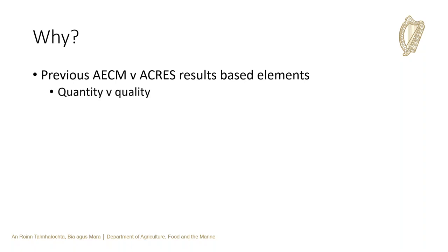When we look at the previous agri-environmental schemes you might be more familiar with, like GLAS, EOS, or even REPS, these schemes often focused on the quantity rather than the quality of the action for biodiversity — for example, how many hedges did you plant or how many hectares of traditional hay meadow did you have. But this didn't always reflect how good or bad the action was for biodiversity or for climate.